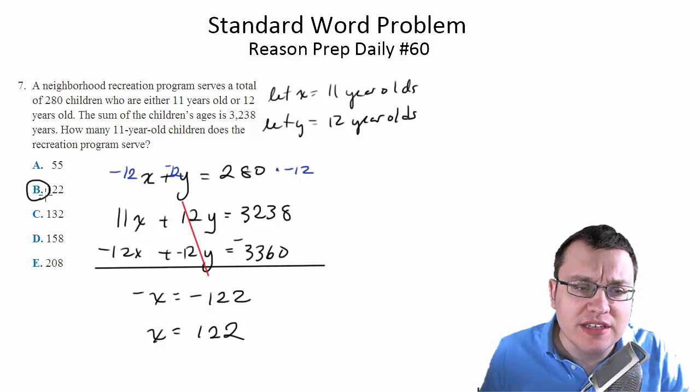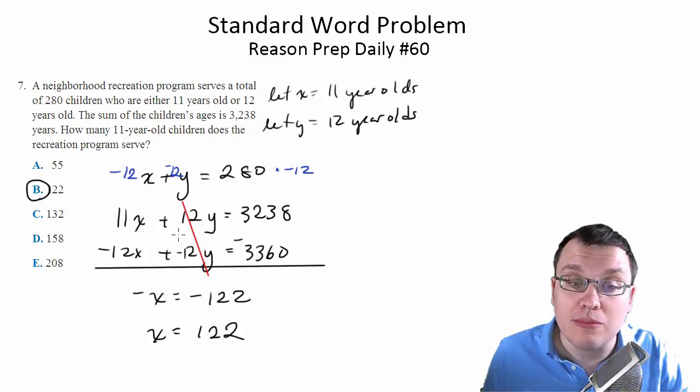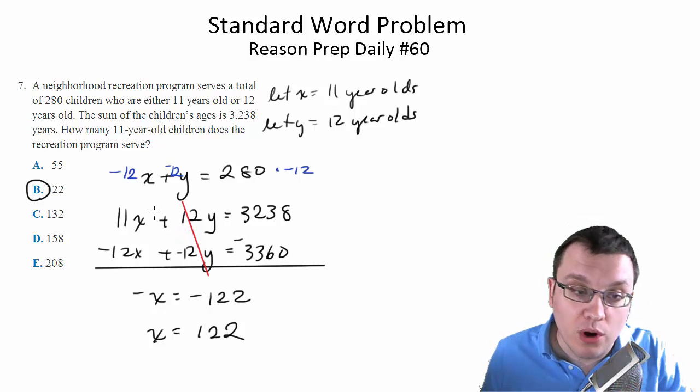And if we wanted to, we could check this. We could see if x is 122, then the number of 12-year-olds must be 280 minus 122. We can plug those numbers into the second equation. And when we did all that, we would see it would work.